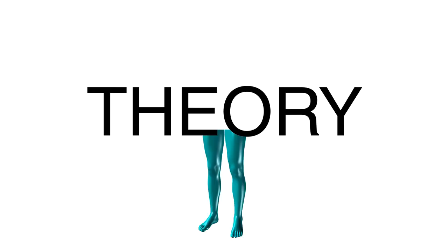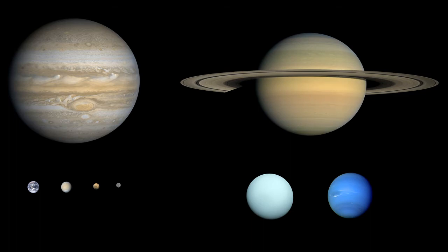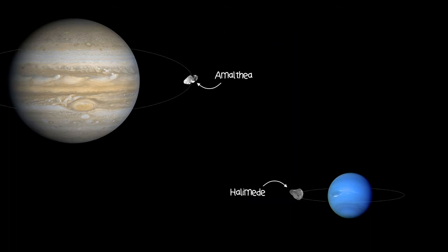Now this theory does have legs. After all, other planets in the solar system, take Jupiter and Neptune for example, have both captured celestial bodies in their orbit. However, the dynamics behind the capture model of lunar origin simply don't add up.